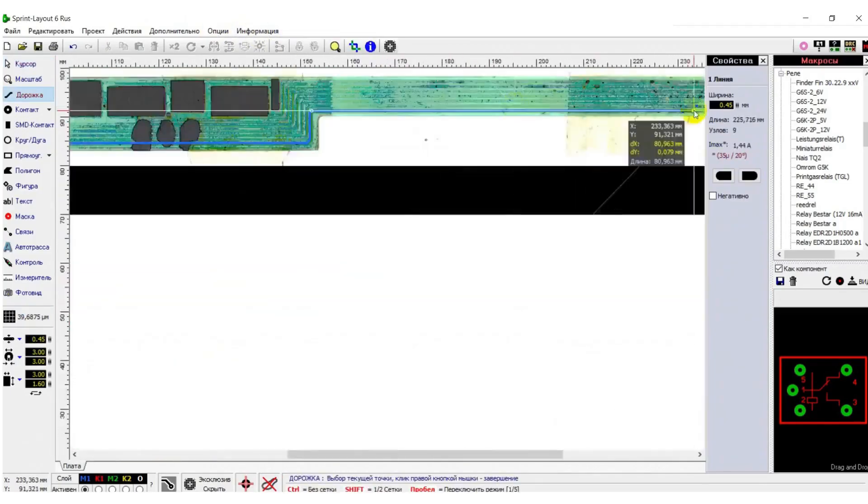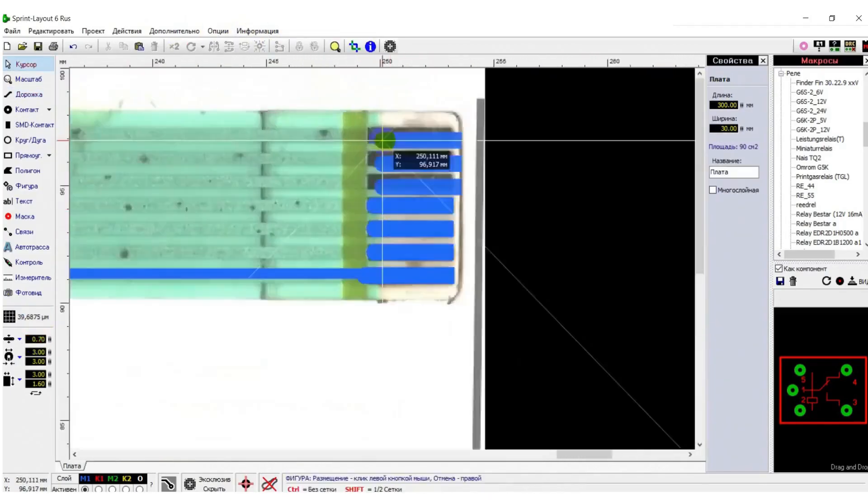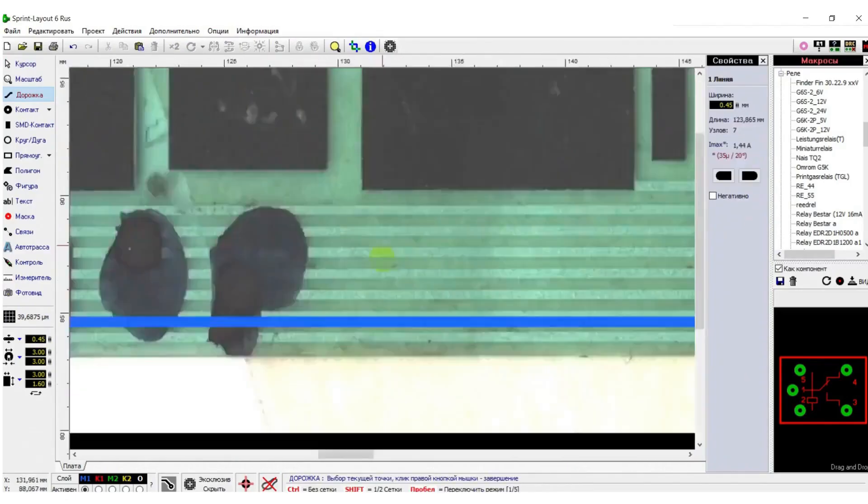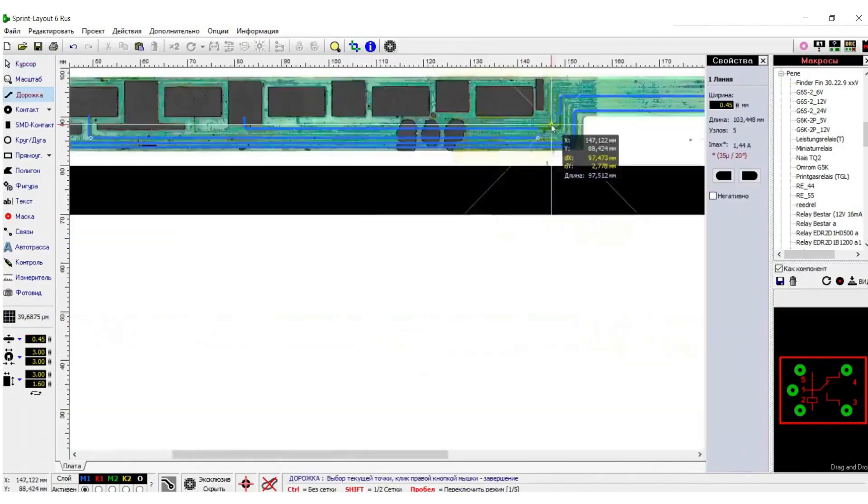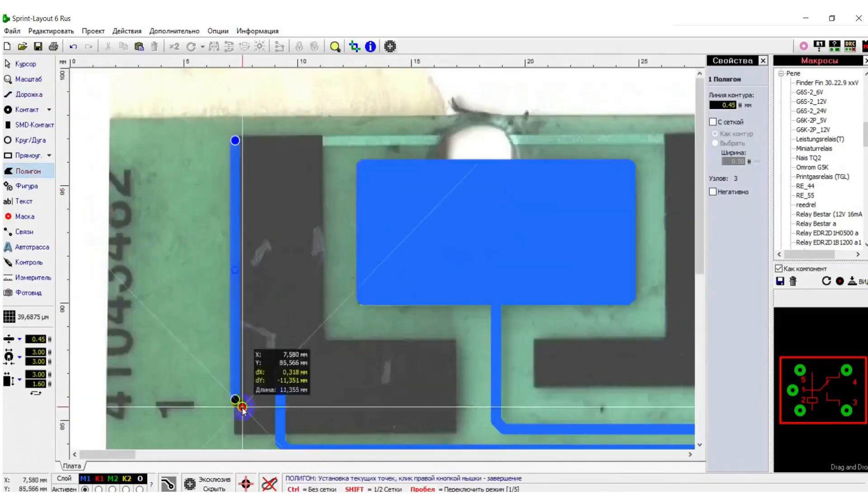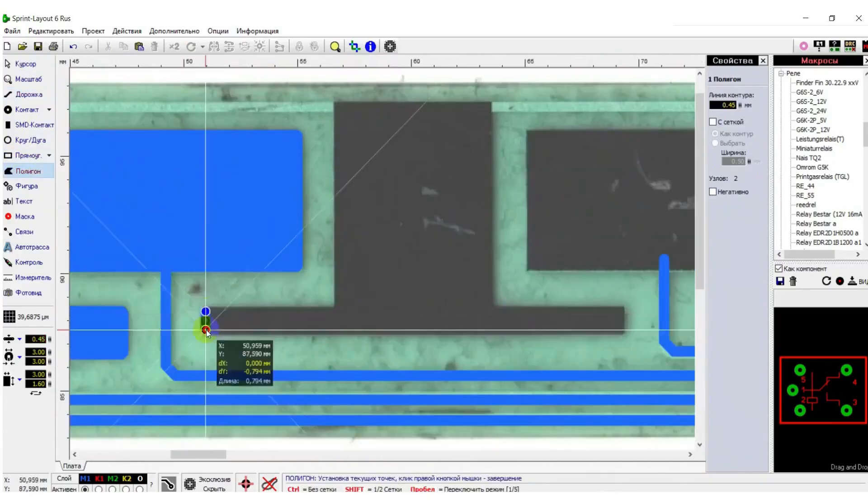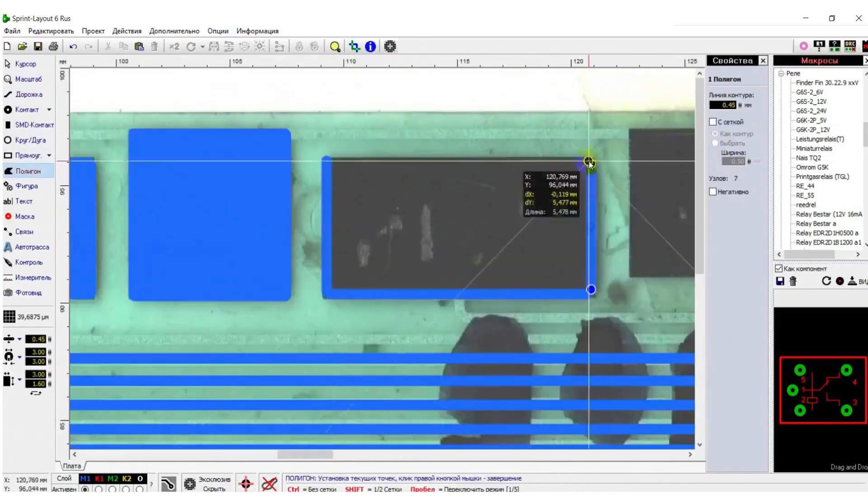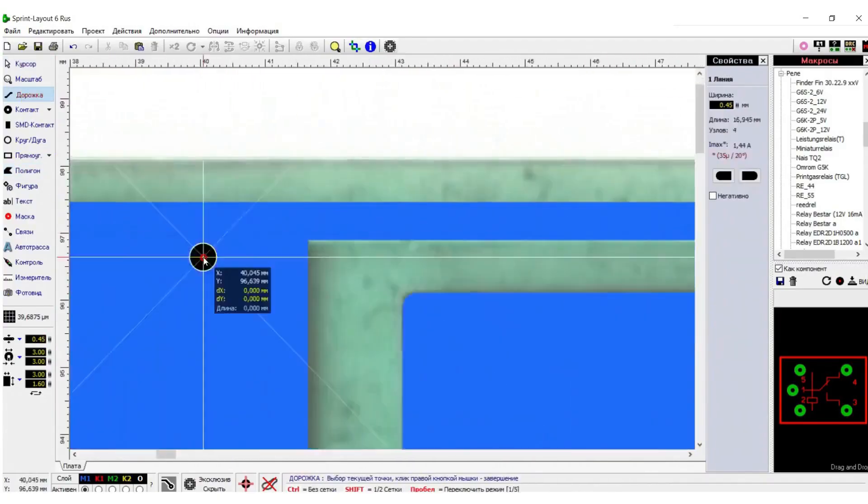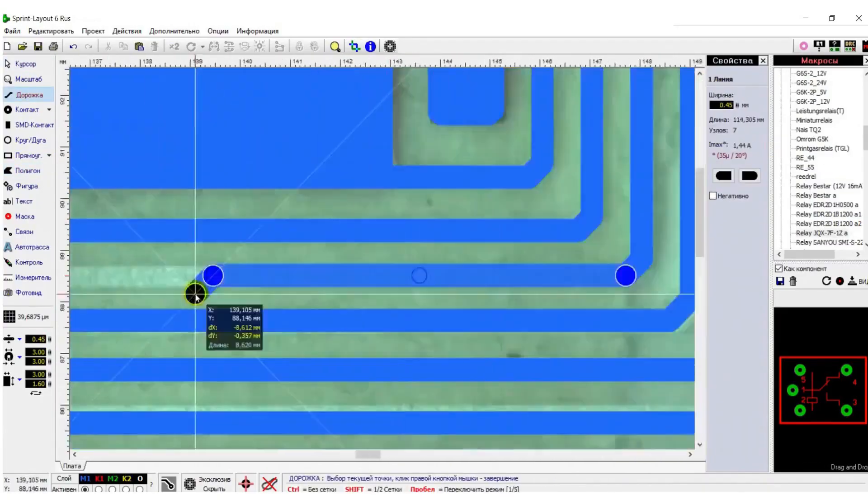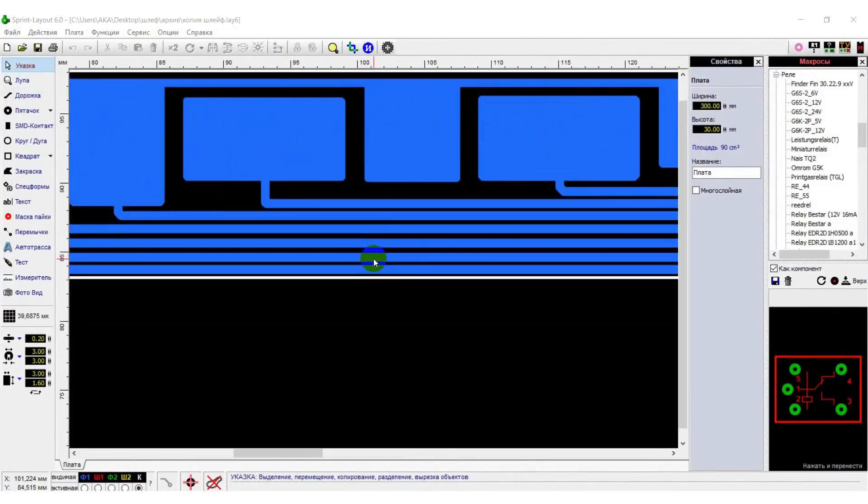Next, we load the image into a PCB editor. In my case, it's Sprint Layout. After that, nothing complicated, just copying. It took me about 10 minutes for everything.